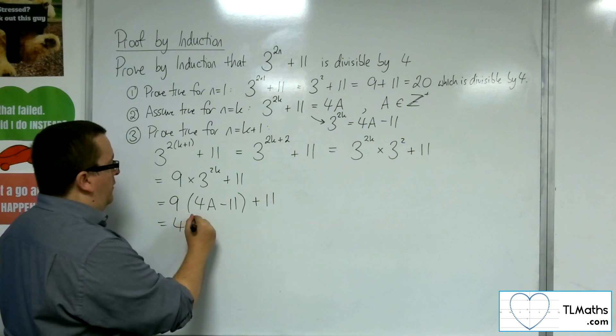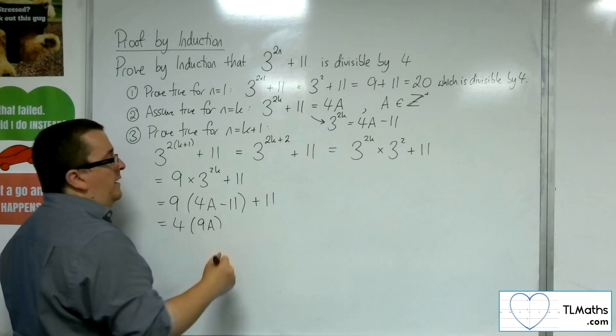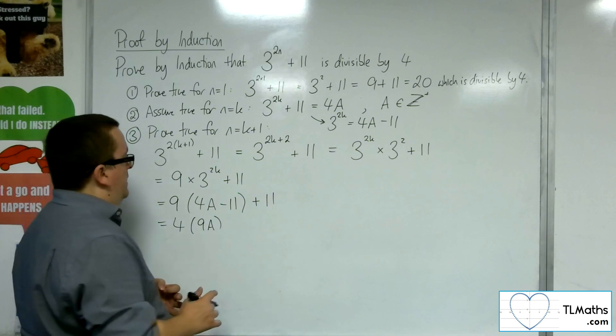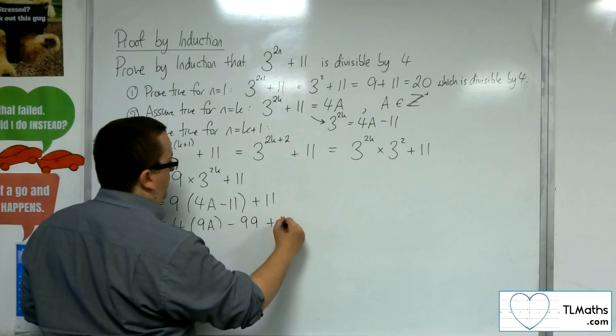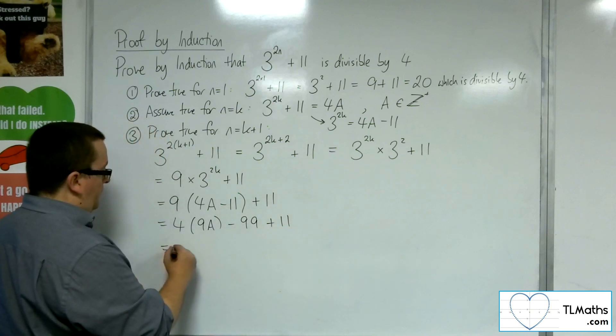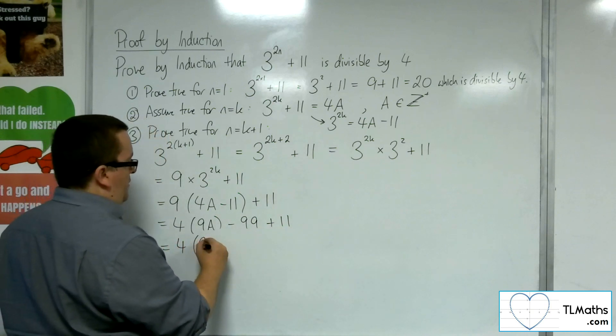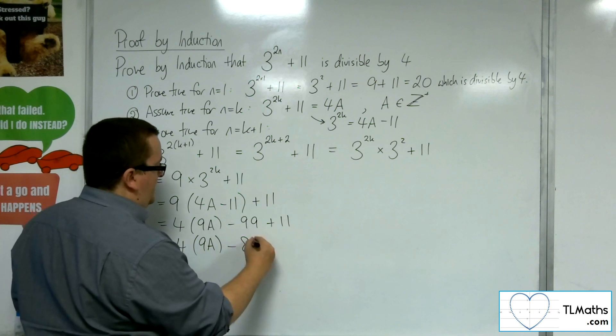9 lots of 4a, but I'm going to write it as 4 lots of 9a instead. So that makes it clear that 4 is a factor. Then we've got this minus 99, and we've got this plus 11, which is equal to 4 lots of 9a, take away 88.